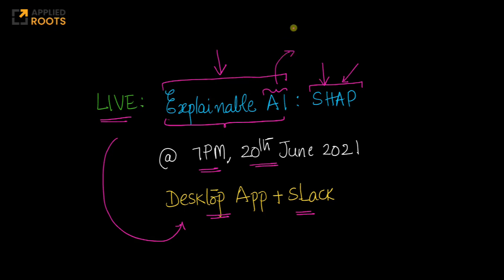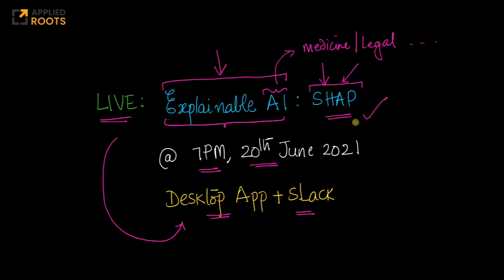are being applied in mission-critical applications, whether it is in medicine, whether it is in legal frameworks, etc. Explainability is becoming more and more important. We hope that this series of two live sessions covering LIME and SHAP will give our learners a good exposure to the state-of-the-art in explainable AI. See you on the coming Sunday.